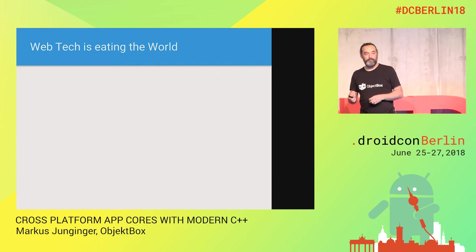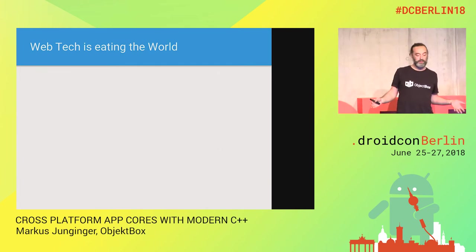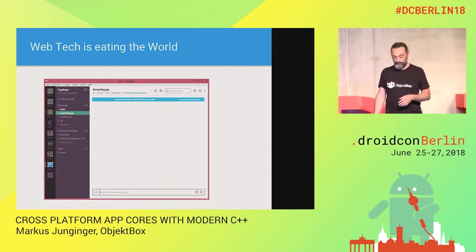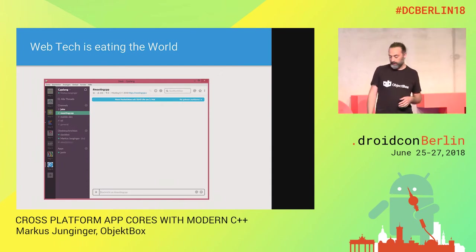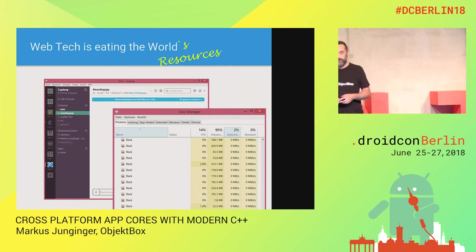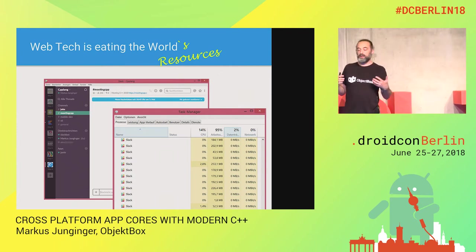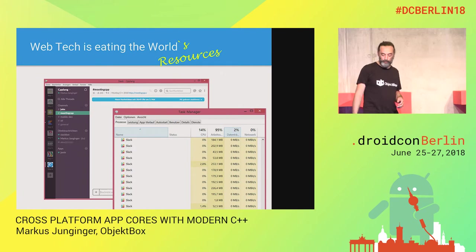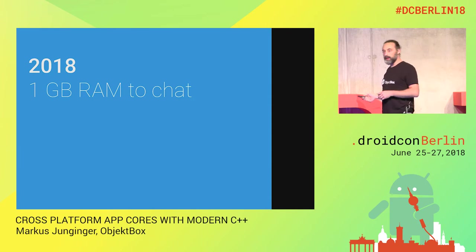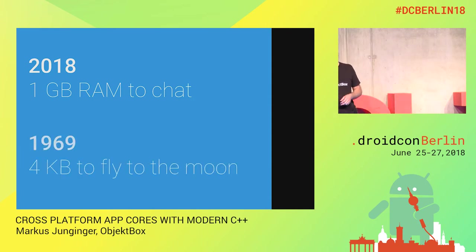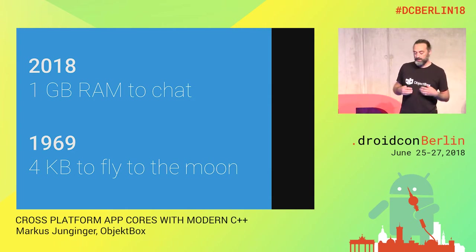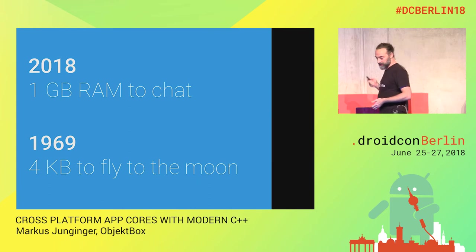I want to start with web technology. Web technology is all around. For example, if you start Slack, it's web technology — it might take a little until the messages are loaded, and it eats a lot of resources. Today we're using like one gigabyte of RAM, while 50 years back, four kilobytes were enough to fly to the moon. It's just a little bit about resourcefulness.